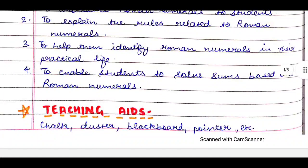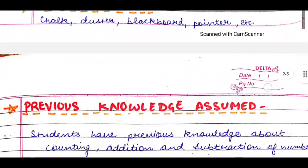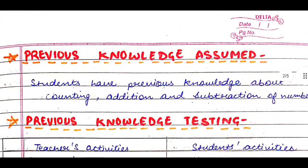After that, the next heading is teaching aids—it means what material do you need to teach the topic. So we write chalk, duster, blackboard, pointer, chart, model, whatever you need you can write over here. After that, next topic is previous knowledge assumed. Students have previous knowledge about counting, addition, and subtraction of numbers.